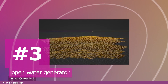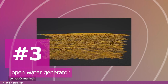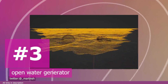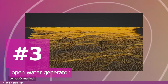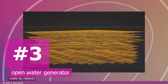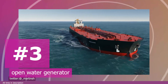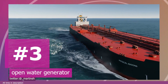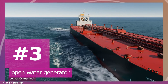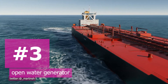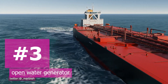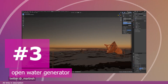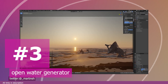Number three: the open water generator. Thinking of making an open water scene with detailed water that goes beyond a simple bump map texture and is more detailed than the ocean modifier, but way more optimized? Check out Martin's open water generator. The mesh is only subdivided where the camera is looking, conserving polygon count while maintaining detail.